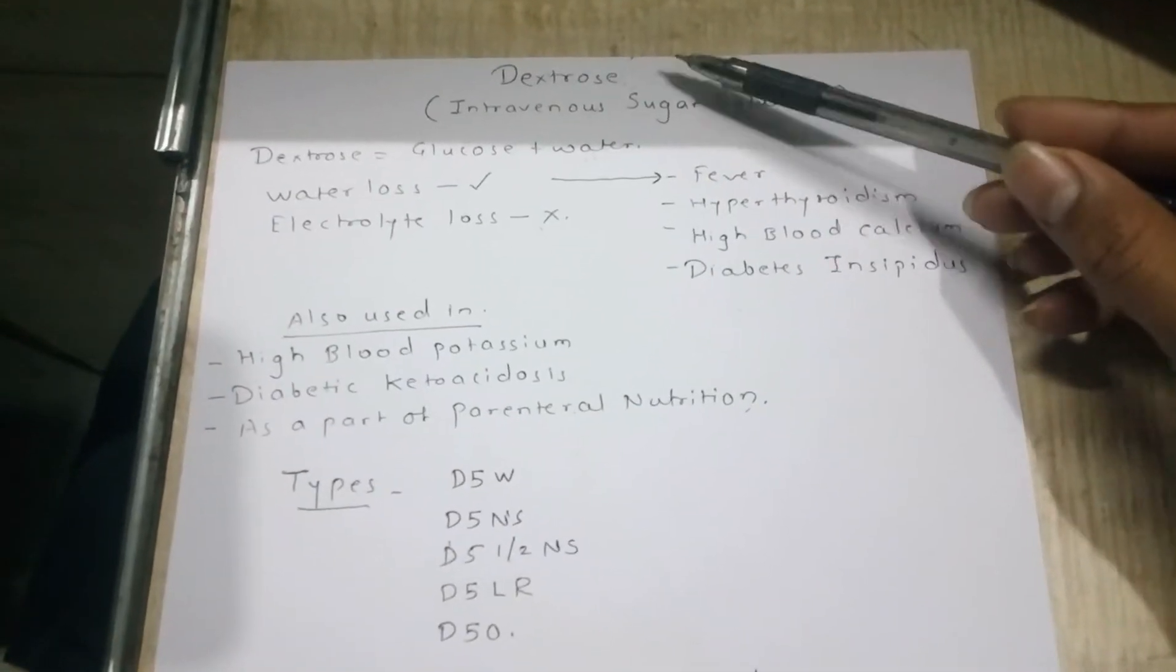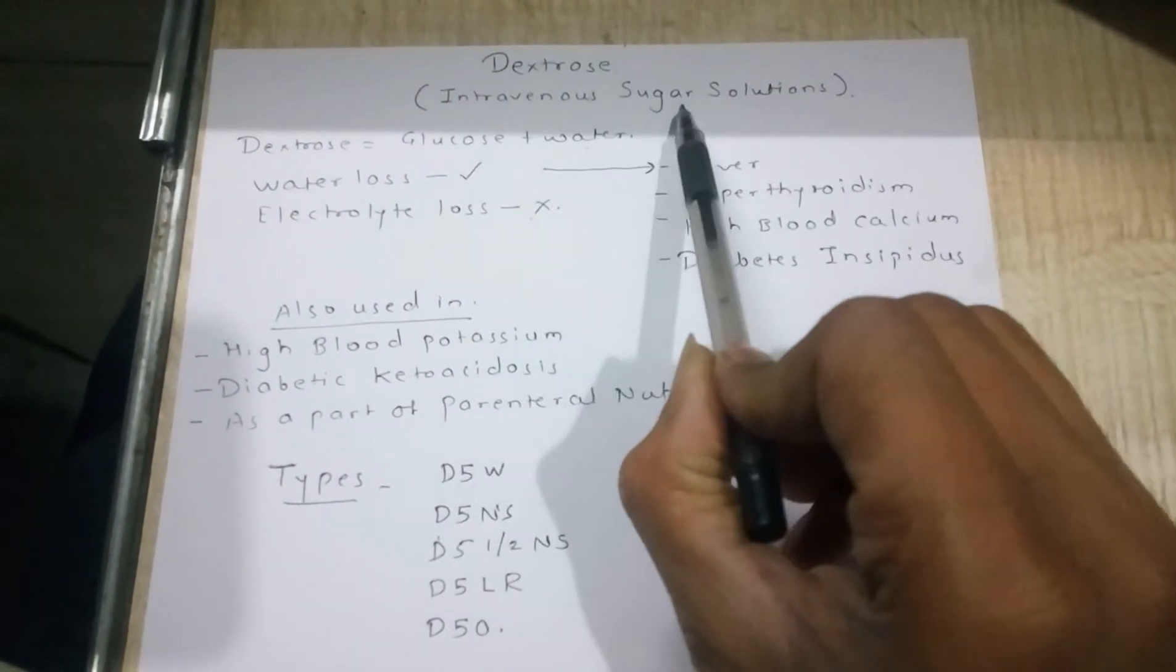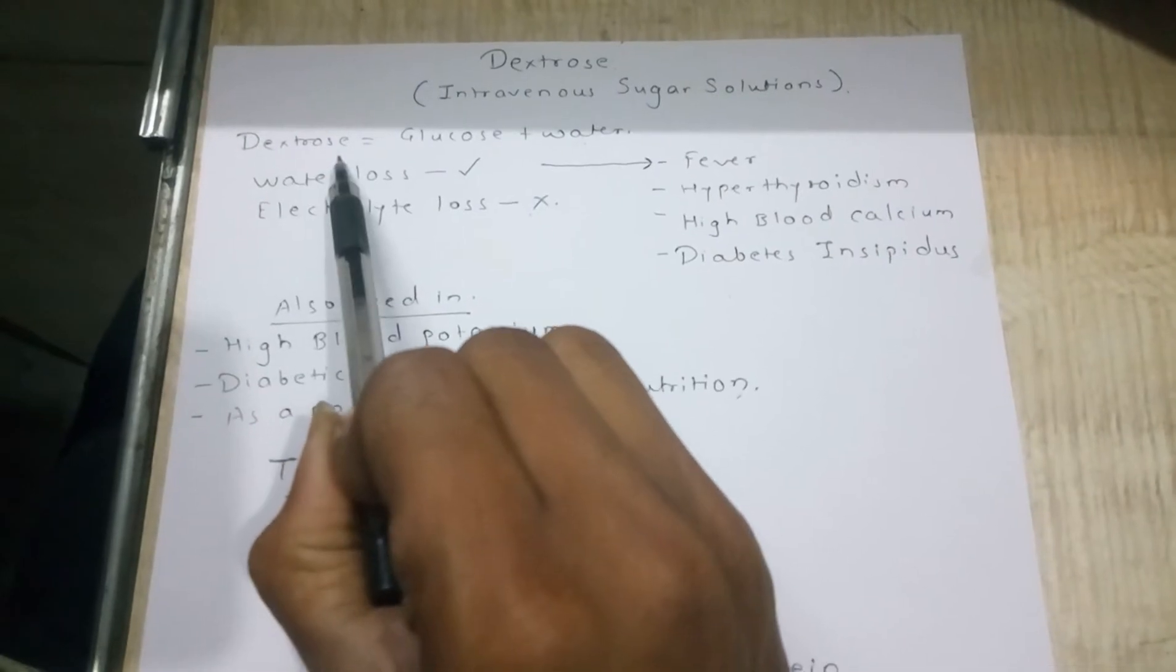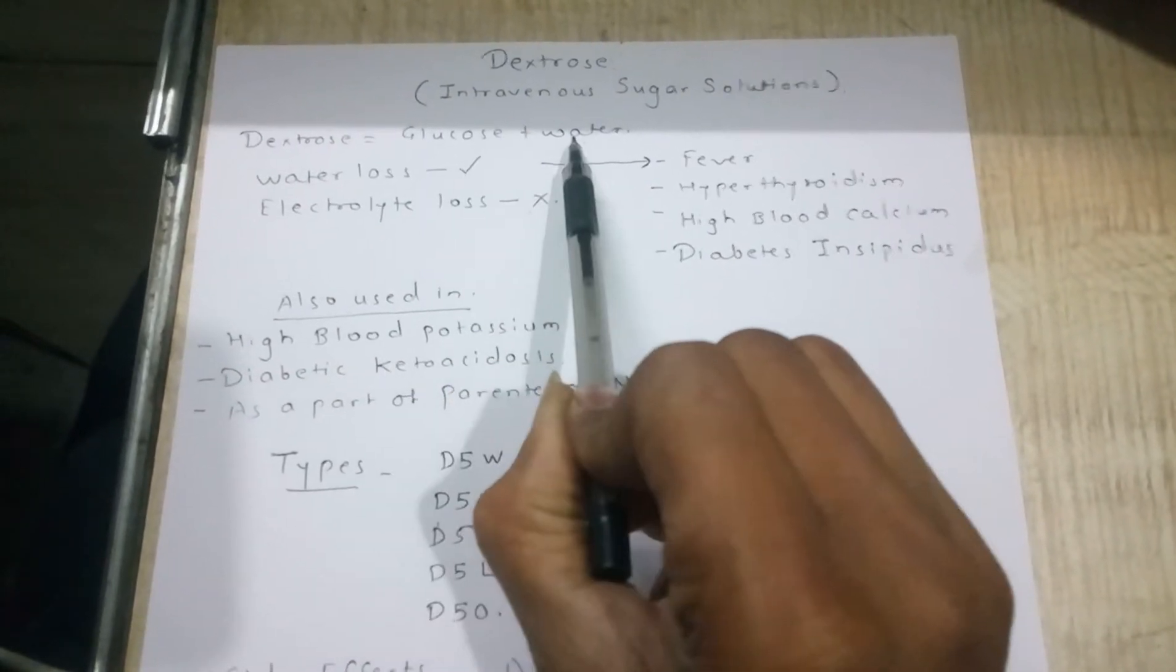Dextrose solution is also known as intravenous sugar solution. Dextrose is made up of glucose and water.